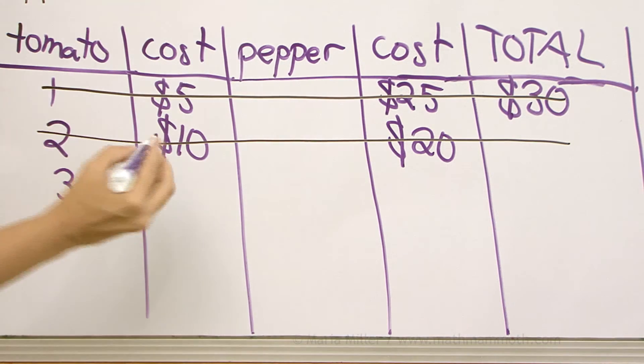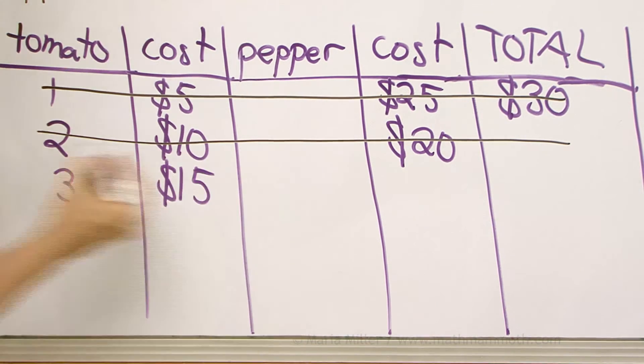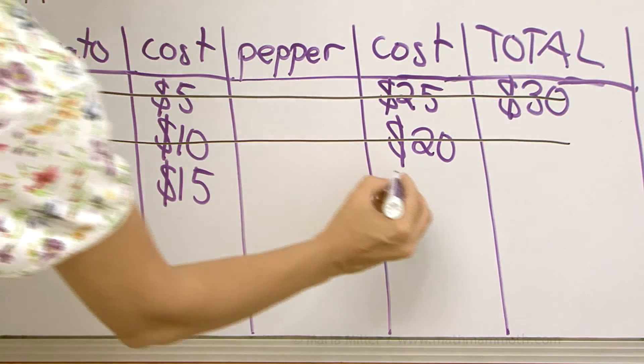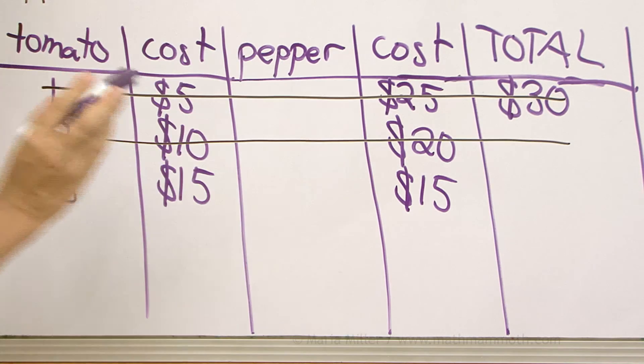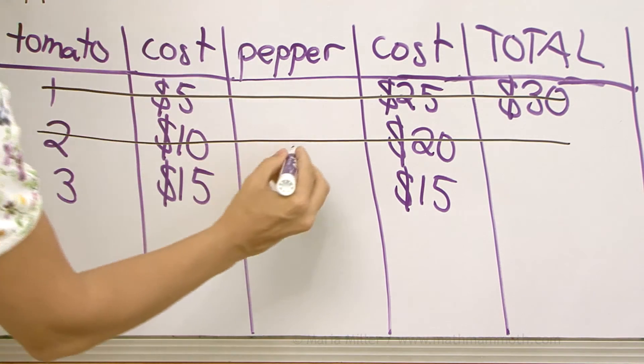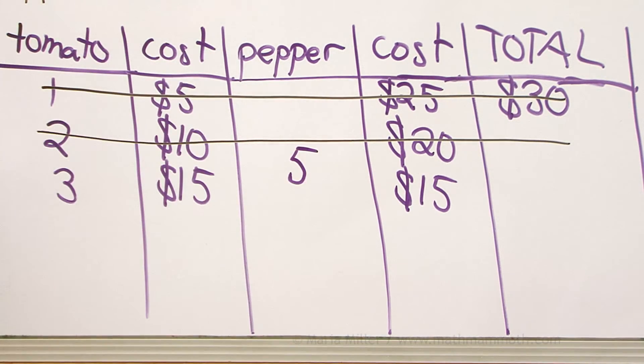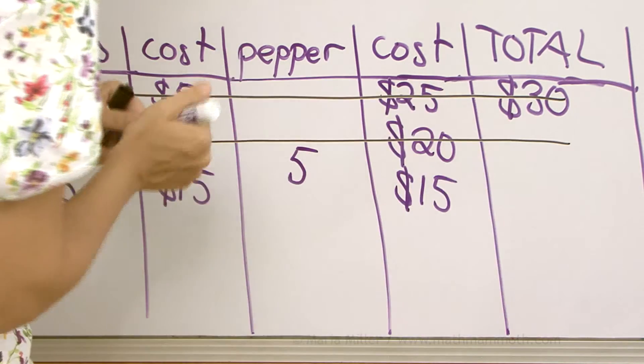What if there's 3 tomato plants? $15. $15 for the tomato plants and 15 for the pepper plants. Aha! Now this will work because I could buy, or she could buy, 5 pepper plants and the total would be 30.